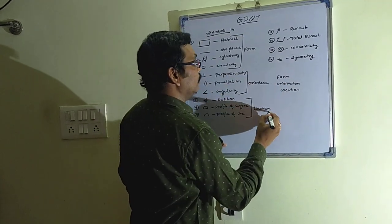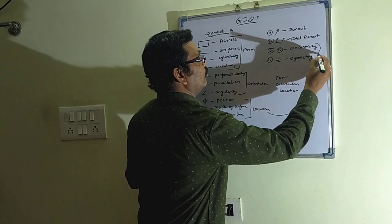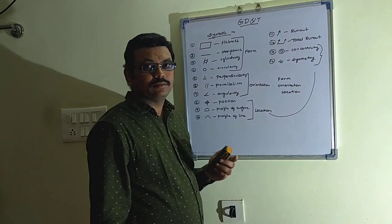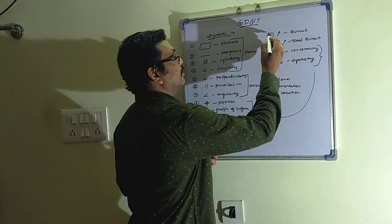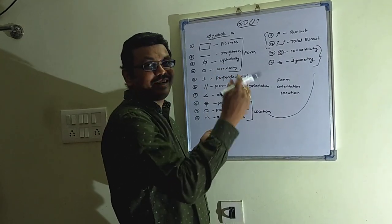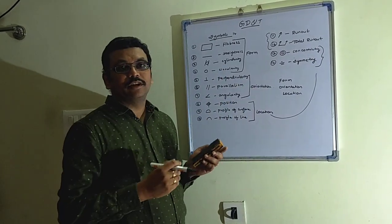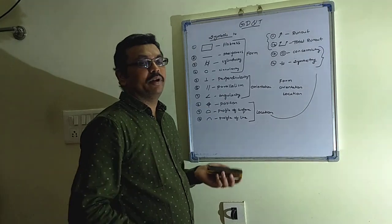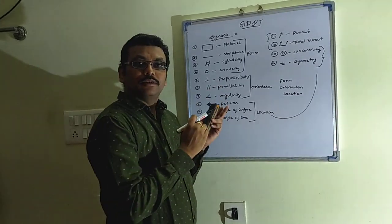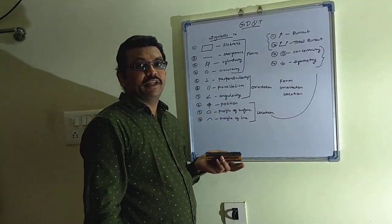Similarly, this location is applicable for these 2 as well. And this is completely a run-out which is used for cylindrical components, defining a symbol of a component - cylindrical component with respect to geometric dimensioning and tolerances.